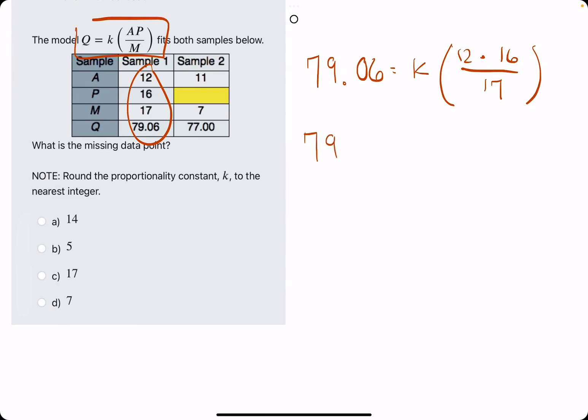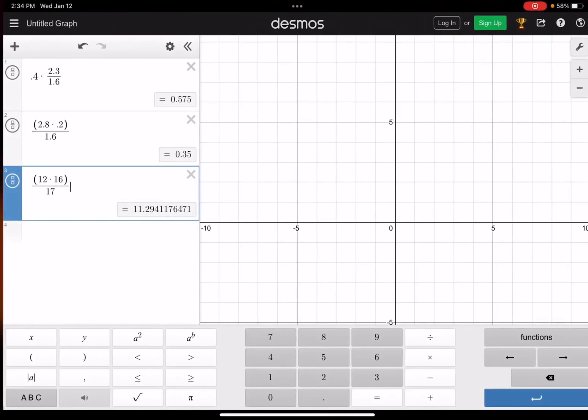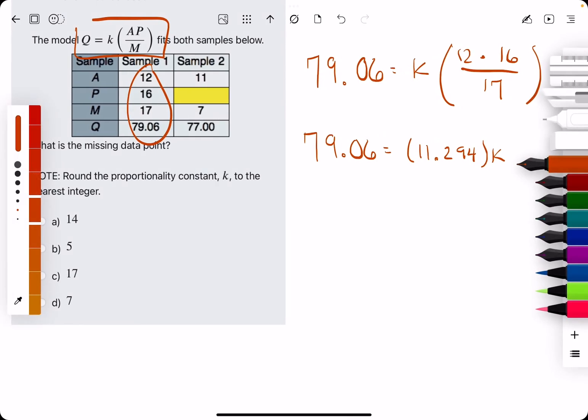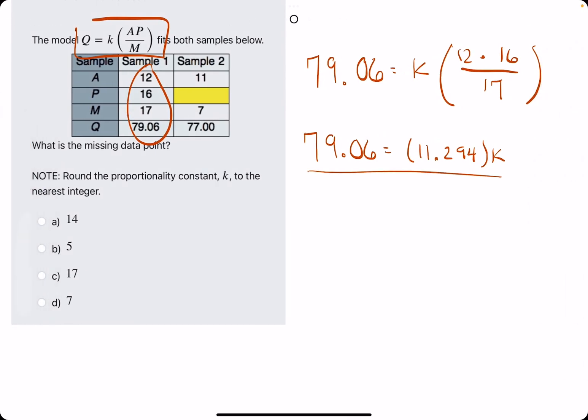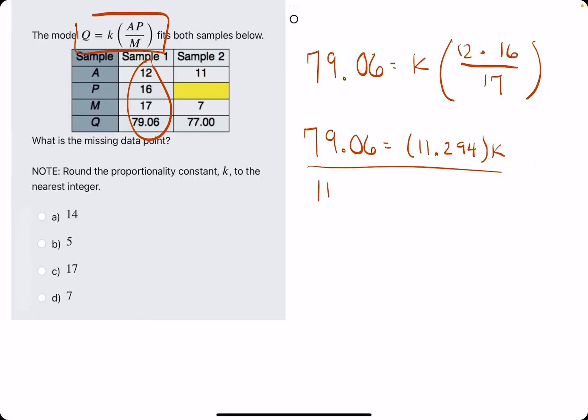So what we have is that 79.06 equals 11.294K. So now we want to get K by itself by dividing by 11.294.